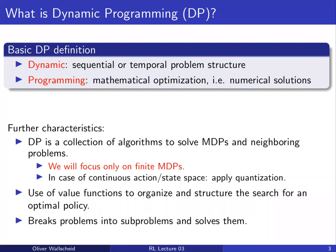DP uses value functions to order different policies in terms of their degree of optimality — which policy is better or worse compared to another can be directly seen from its value function. A very typical characteristic of DP is that it breaks up an overall problem into different sub-problems, solves them, and then brings back together all the sub-solutions to form an overall solution to a given MDP problem.